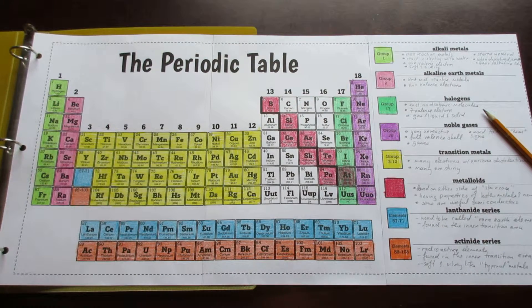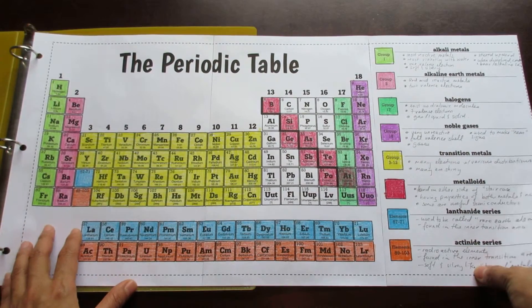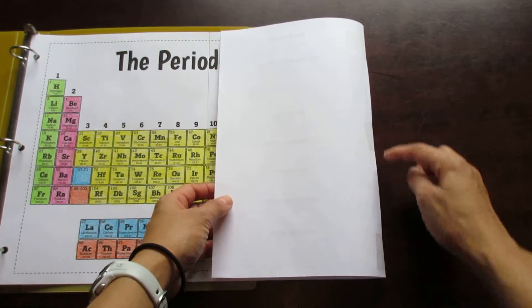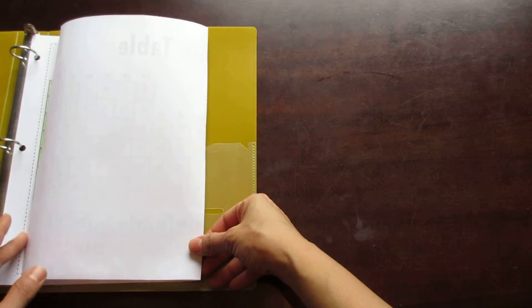This is the Big Periodic Table foldable by Tangstar Science. Big in this case refers to three pieces of paper that when cut along the seams and taped, forms a foldable which fits neatly into a binder without impeding the binder rings.